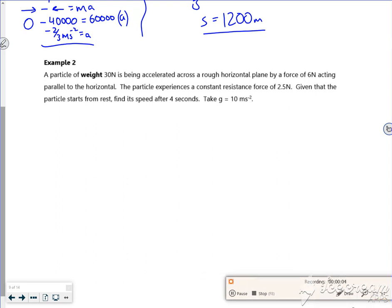Right then, so let's have a look at this one. It says a particle of weight 30 newtons is being accelerated across a rough plane by a force of 6 newtons acting parallel, with a constant resistive force of 2.5 newtons - that's your friction. Let's draw a picture. Here's my wonderful particle. It's got 30 newtons acting down, a force of 6 newtons dragging it forwards, and 2.5 newtons going that way.